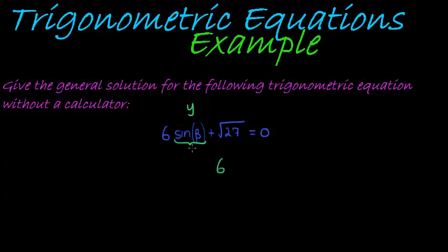Which in this case it's not y, but it's 6 sine of beta equal to negative the square root of 27, because I just subtracted the square root of 27 on both sides.